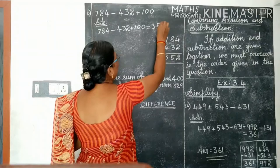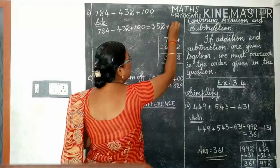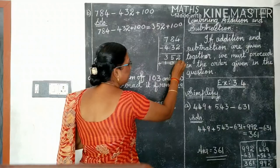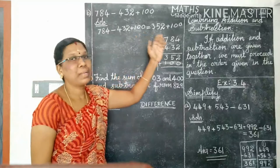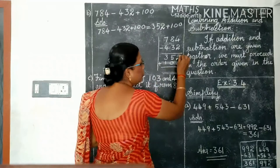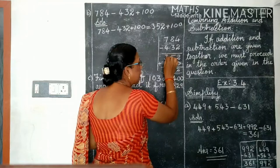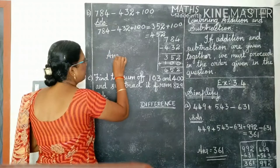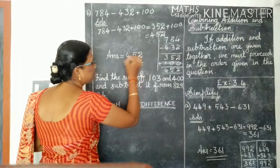So we need to add 352, then what is the symbol here? Plus. Plus 100. So we need to add these 2 numbers now. 352 plus 100. Easily you can say 352 plus 100 is 452. But you need to add: 2 plus 0 is 2, 5 plus 0 is 5, 3 plus 1 is 4. So the answer is 452. Answer is equal to 452.